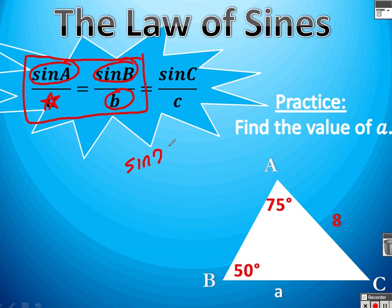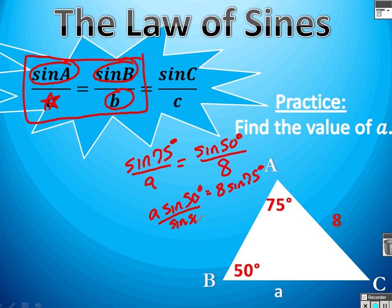Sine of A is sine of 75, divided by, we don't know what side A is. Sine of B is sine of 50 degrees, and then side B is 8. From here, we have a proportion. We need to cross-multiply here. So I'm going to have A times sine of 50 is going to equal 8 times sine of 75. To get A by itself, I'm going to divide both sides by sine of 50.